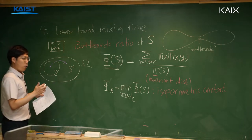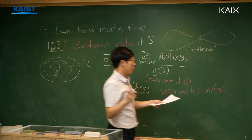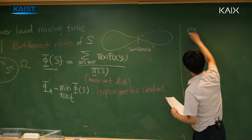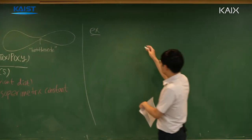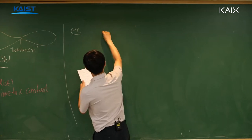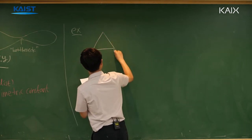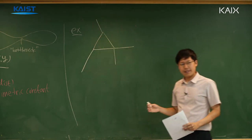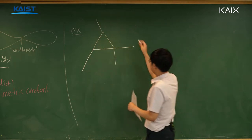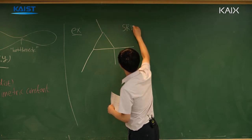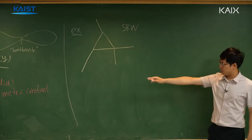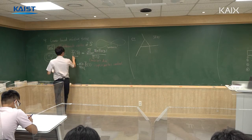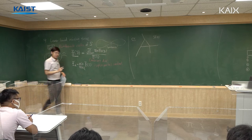Why do we call this the isoperimetric constant? There is an intuition. Let's consider a simple random walk on a graph and compute the bottleneck ratio. What is the bottleneck ratio of the simple random walk?